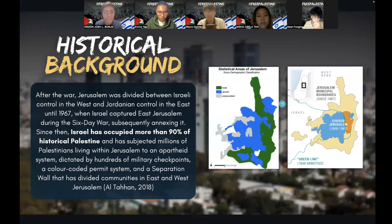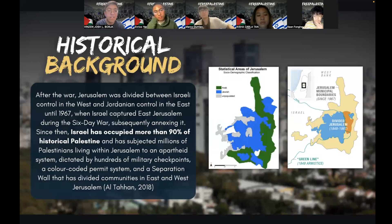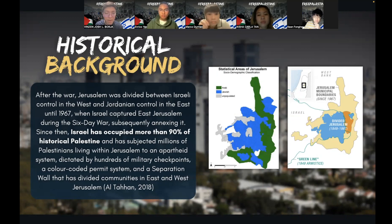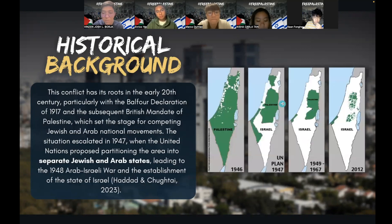Needless to say, this has caused much controversy. After the war, Jerusalem — the center of both Israel and Palestine — was divided into two distinct areas: West Jerusalem and East Jerusalem. After the Six-Day War, Israel subsequently annexed Jerusalem, and now it has occupied more than 90% of historical Palestine, subjecting millions of Palestinians living within Jerusalem to an apartheid system, where Palestinian people are dictated by military checkpoints, permit systems that restrict mobility, and a separation wall that has divided communities in East and West Jerusalem. As you can see in the maps on your screen, there is a stark divide between the racial demographics of these two parts of Jerusalem, traced from the Arab-Israeli conflict.